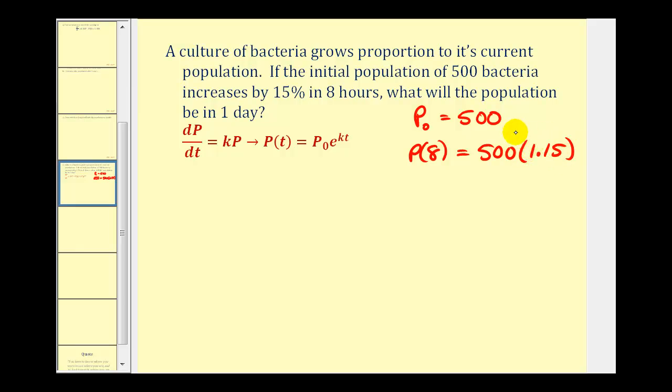The one represents the initial 500, the 0.15 represents the increase of 15%, and this product is equal to 575. So P of eight equals 575.